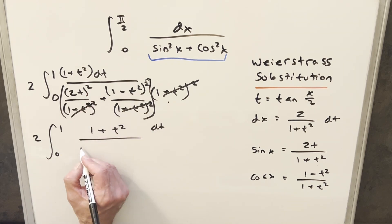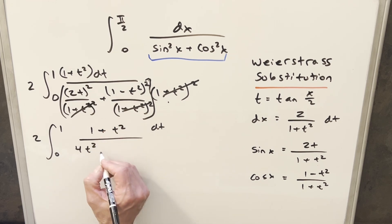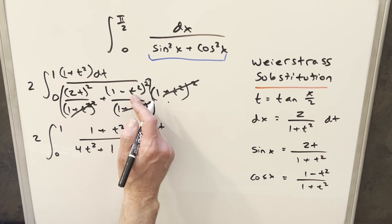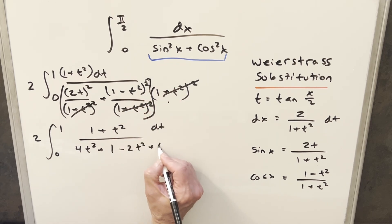Multiplying all this up, the first term, when we square this, this is going to become 4t². Distributing this out, we get 1 minus 2t². And then squaring it, we're going to have a plus t to the fourth.